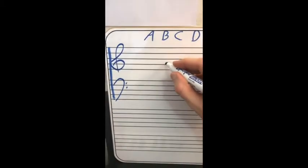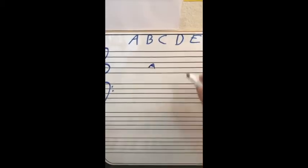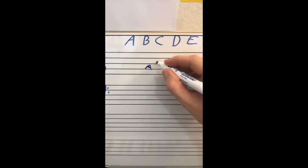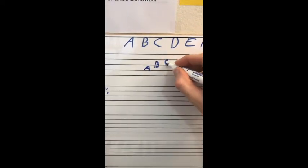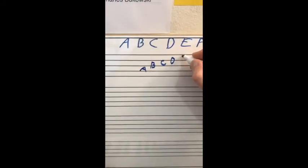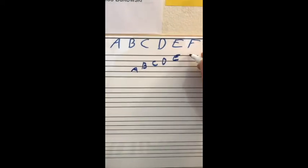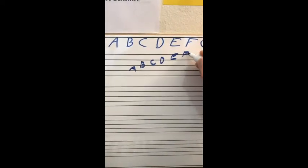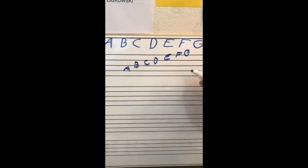In the treble clef, A is right here, in this second space, which means B is here, stepping up to C, which steps up to D, steps up to E, the top space, steps up to F, the top line.